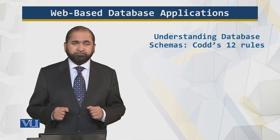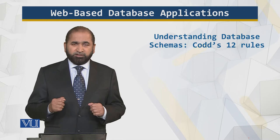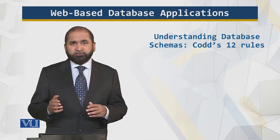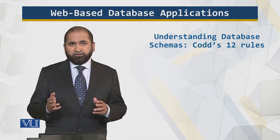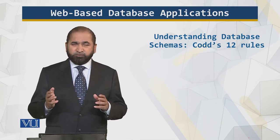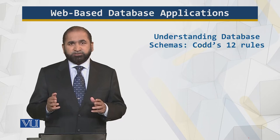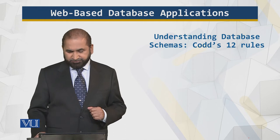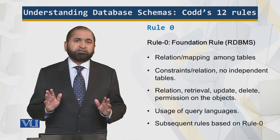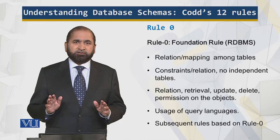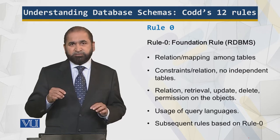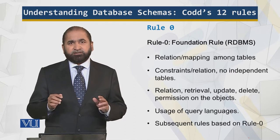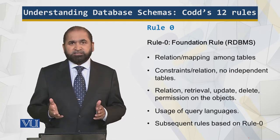It's a robust model. In this module I'll briefly go over those rules of Codd, and in the next module I will explain those rules using some simple examples. So let's start with those rules. This is the foundation rule — rule number zero. This rule must be applicable for a database model to be a relational model.